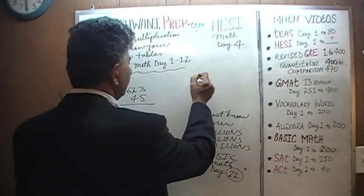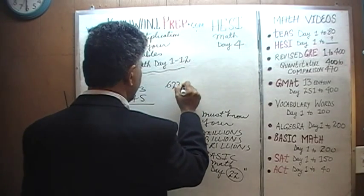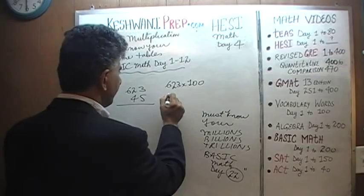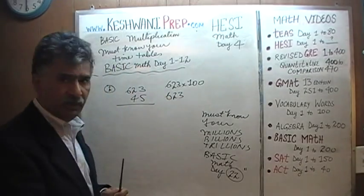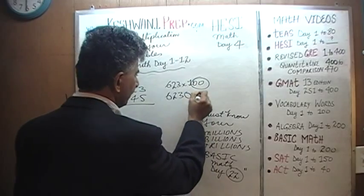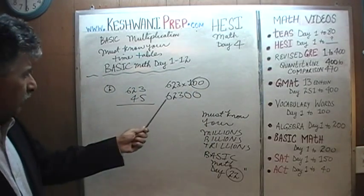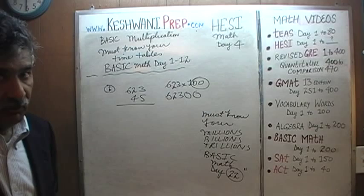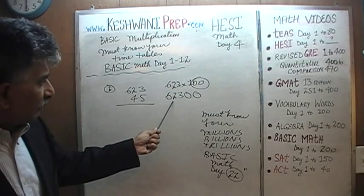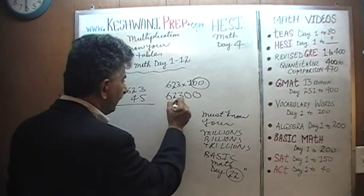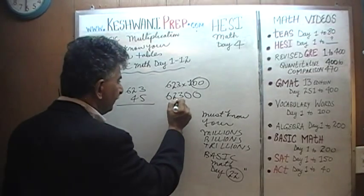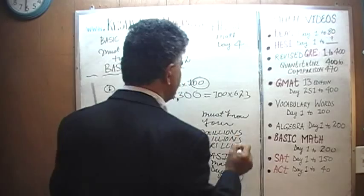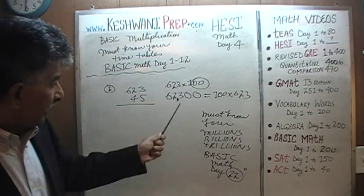Six hundred and twenty-three — if you were to multiply it by a hundred, the answer would simply be sixty-two thousand, three hundred. We're not multiplying by a hundred; we're multiplying by forty-five. Forty-five is not close to a hundred, but forty-five is very close to fifty. So if sixty-two thousand, three hundred represents one hundred times six hundred and twenty-three, then fifty times six hundred and twenty-three would be half of that amount.